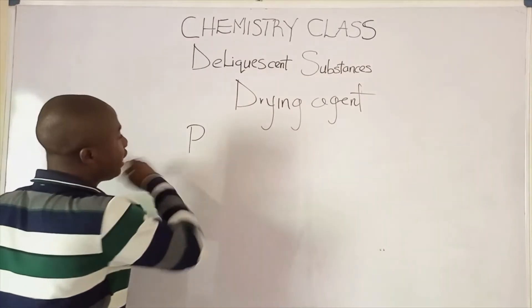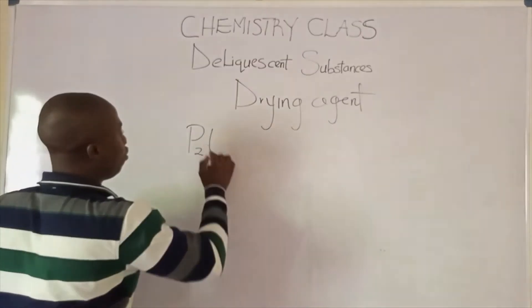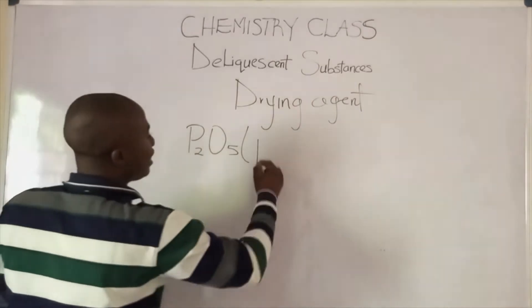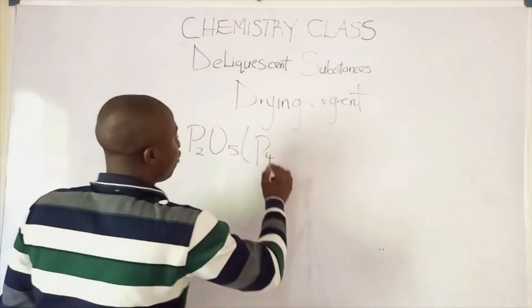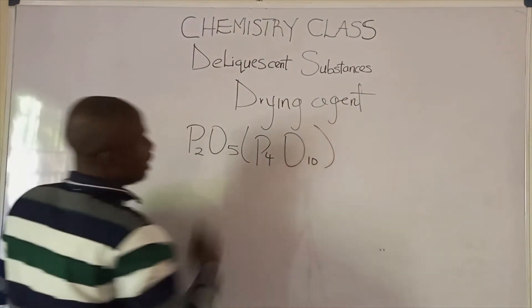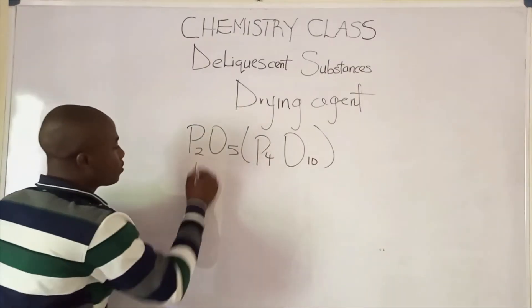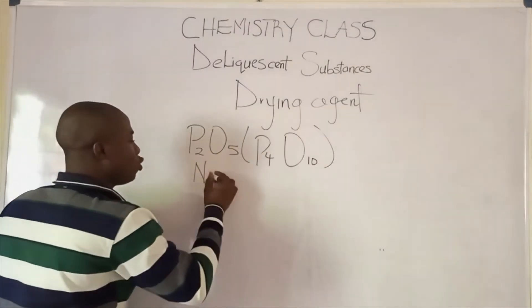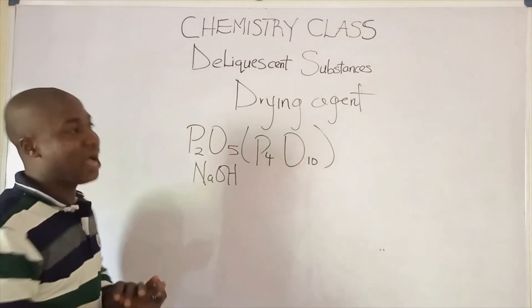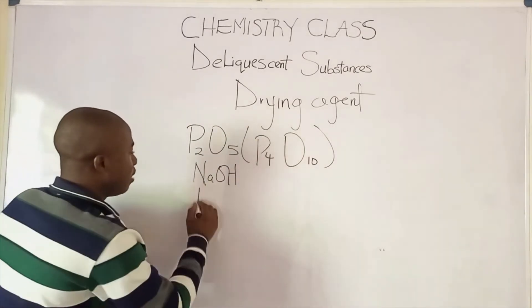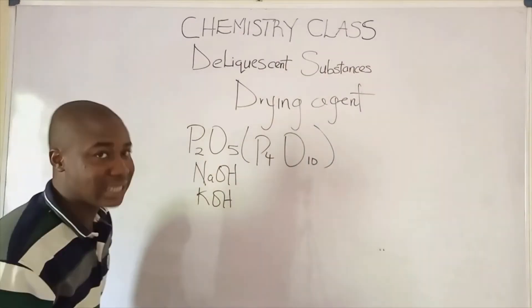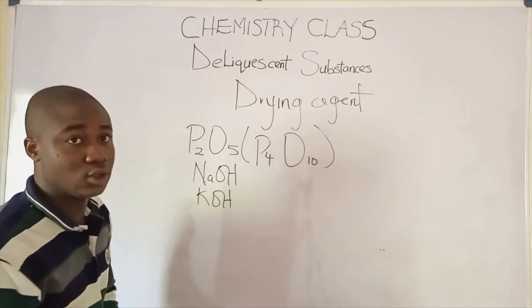P₂O₅, or we say P₄O₁₀. Now we have other substances like sodium hydroxide — they act as a deliquescent substance. Potassium hydroxide — they act as a deliquescent substance.